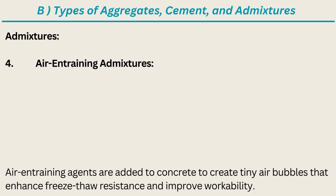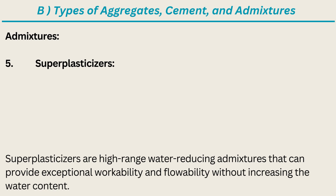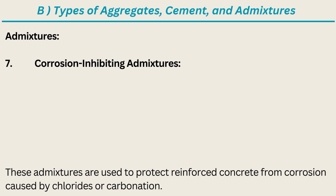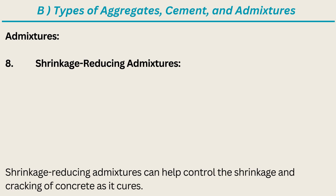Item 4: Air-Entraining Admixtures. Air-entraining agents are added to concrete to create tiny air bubbles that enhance freeze-thaw resistance and improve workability. Item 5: Superplasticizers. Superplasticizers are high-range water-reducing admixtures that can provide exceptional workability and flowability without increasing the water content. Item 6: Retarding Superplasticizers. These admixtures combine the properties of set retarders and superplasticizers, allowing for delayed setting while maintaining workability.